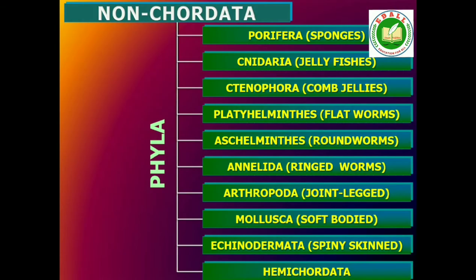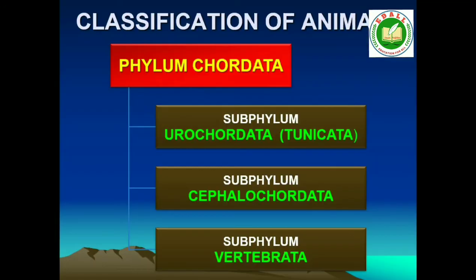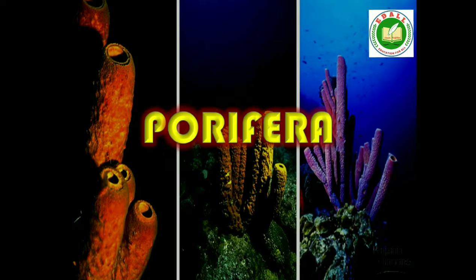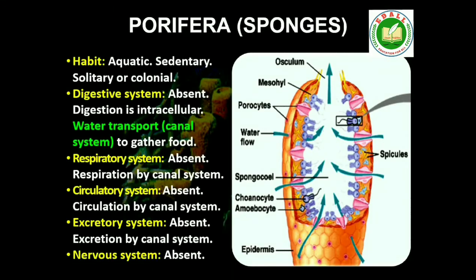4.2 Classification of Animals. The broad classification of Animalia based on common fundamental features. First is Phylum Porifera. Members of this phylum are commonly known as sponges. They are generally marine and mostly asymmetrical animals.